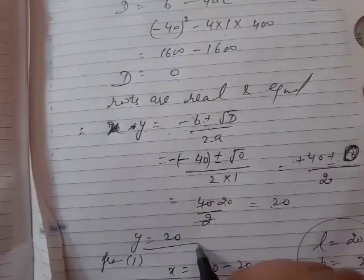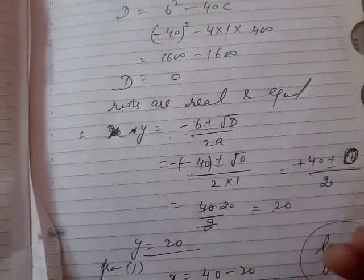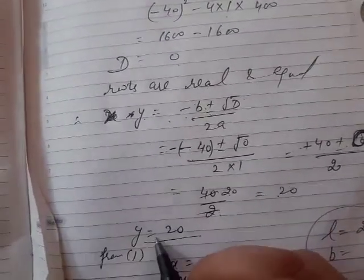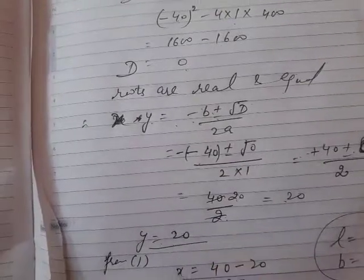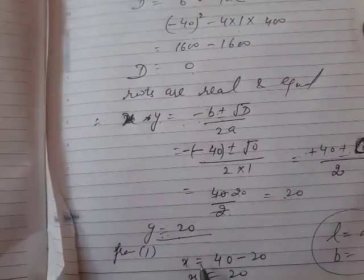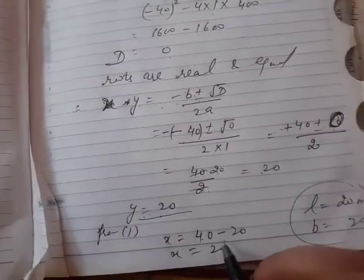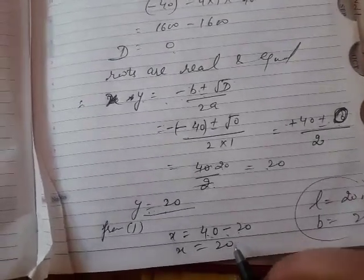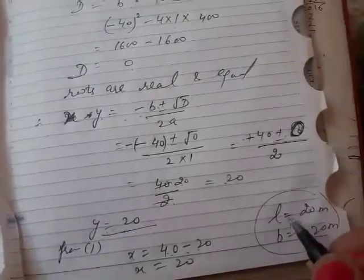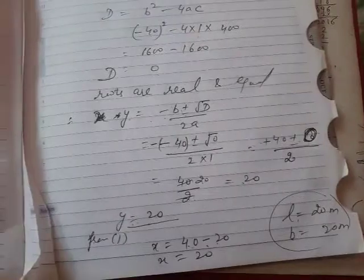So y equals 20, because plus 0 or minus 0 equals 0, that is 20. If y equals 20, then from the first equation x equals 40 minus 20, that is 20 meters. So length and breadth are both 20 meters.